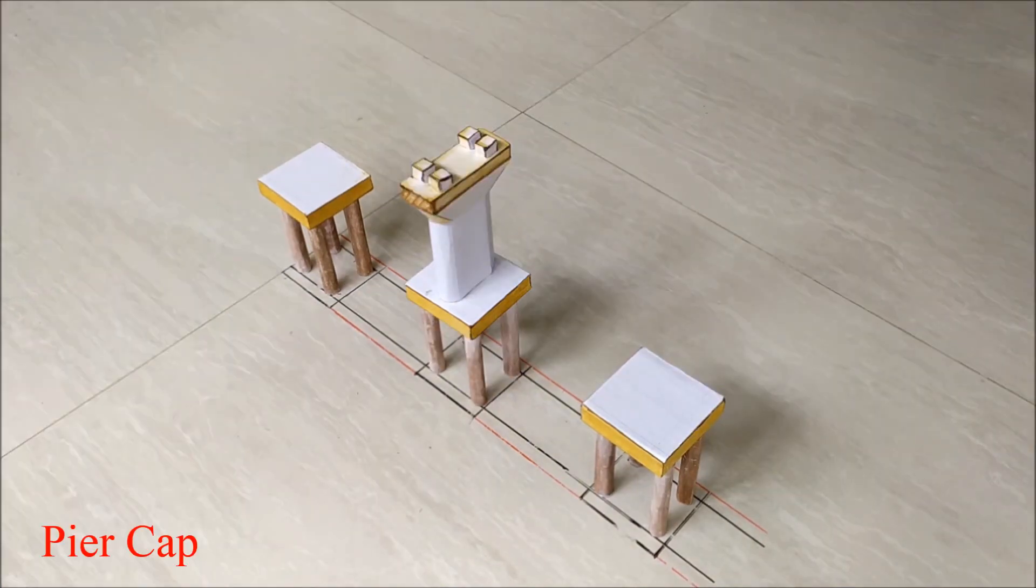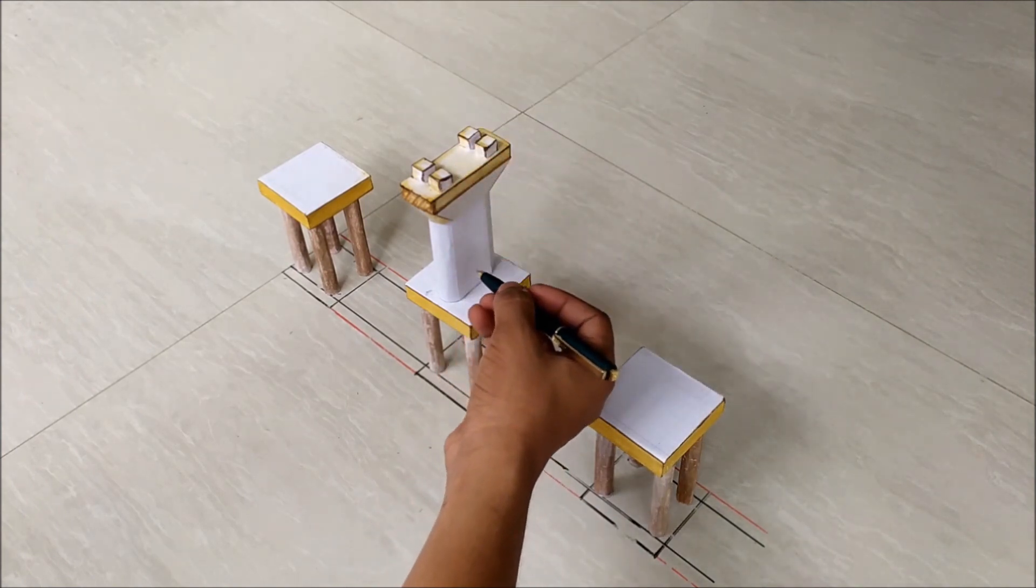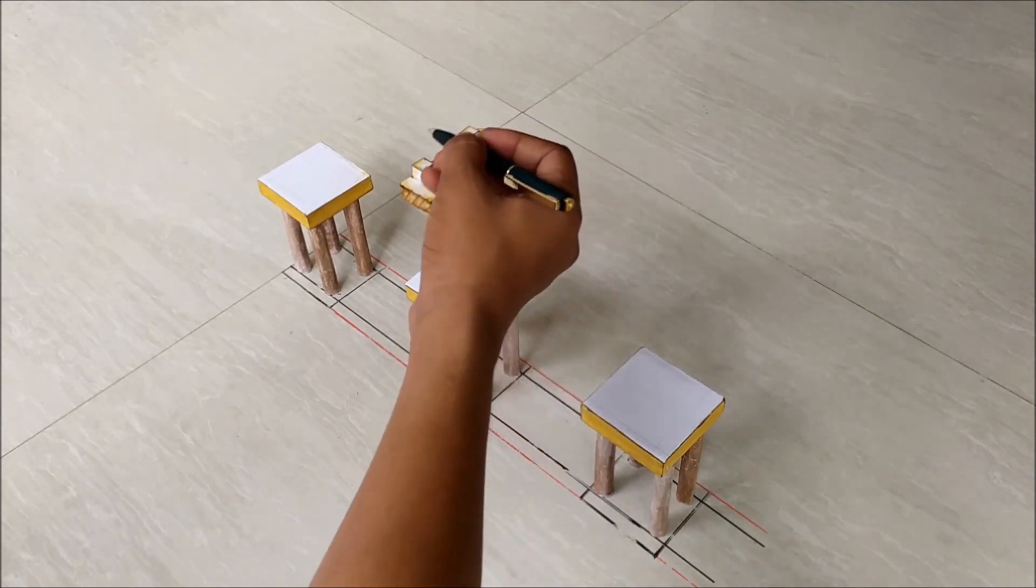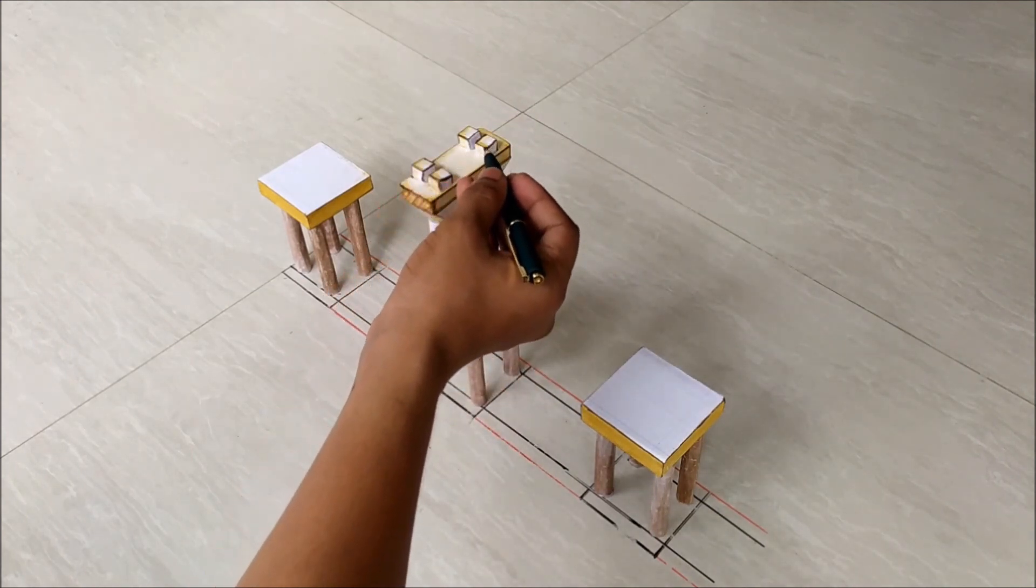This is the pier cap with pedestal. Pier cap is designed to distribute concentrated loads evenly over the area of the pier and usually provides sufficient seating space for the bridge girders. And those are called pedestals.